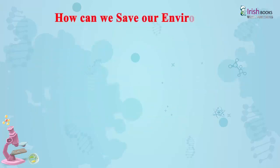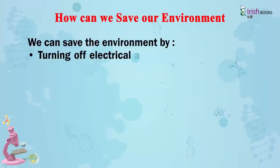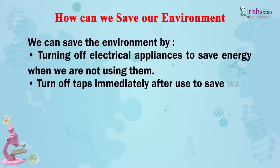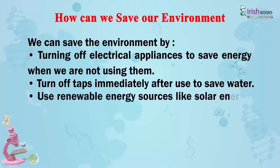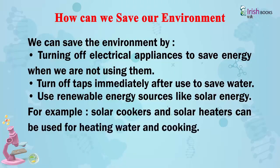How can we save our environment? We can save the environment by turning off electrical appliances to save energy when we are not using them. Turn off taps immediately after use to save water. Use renewable energy sources like solar energy — for example, solar cookers and solar heaters can be used for heating water and cooking.